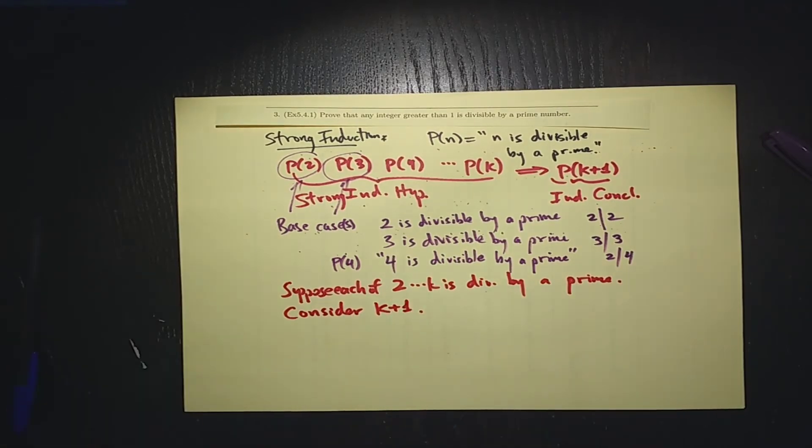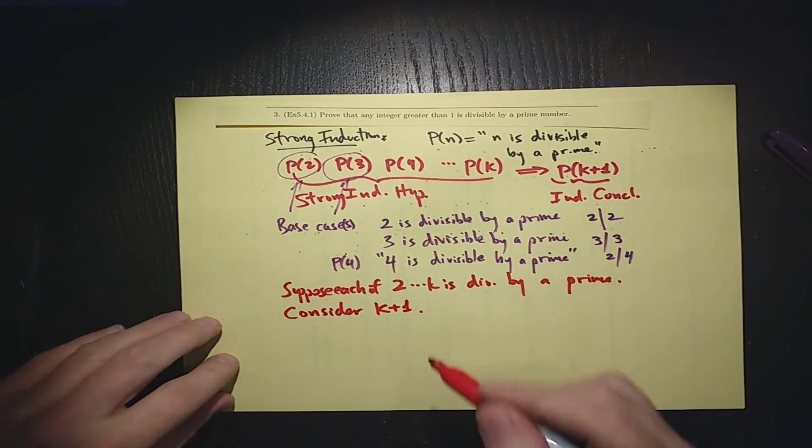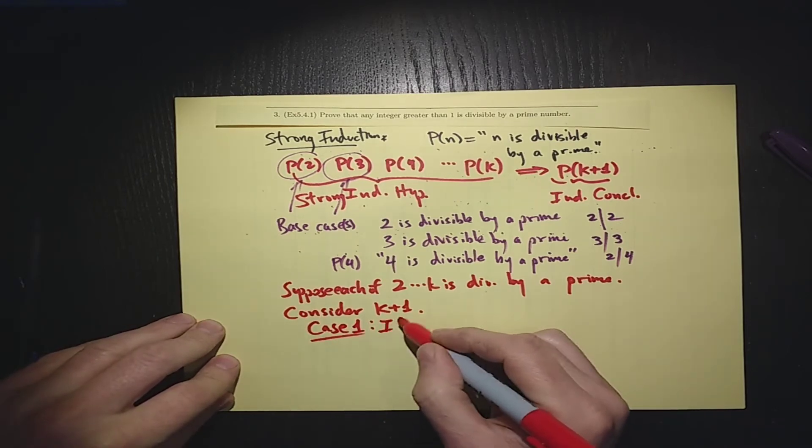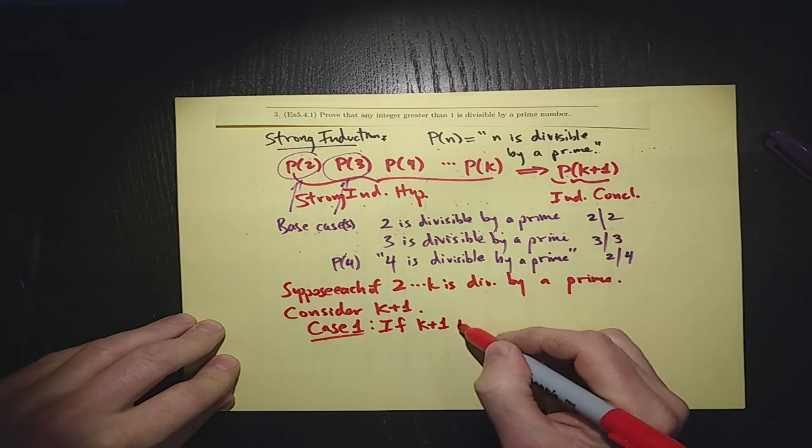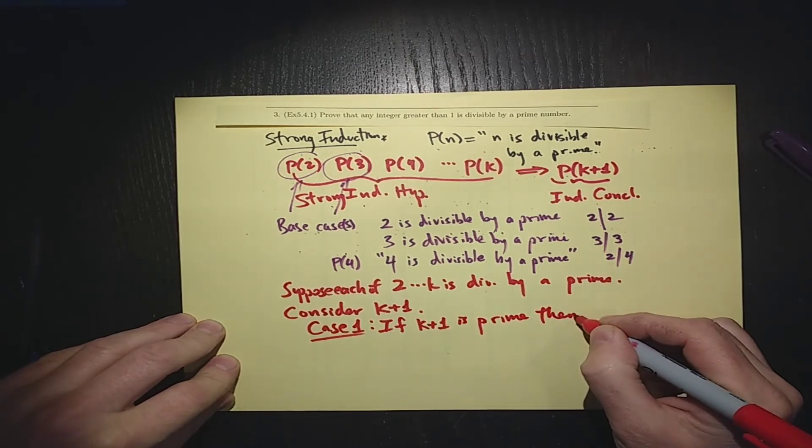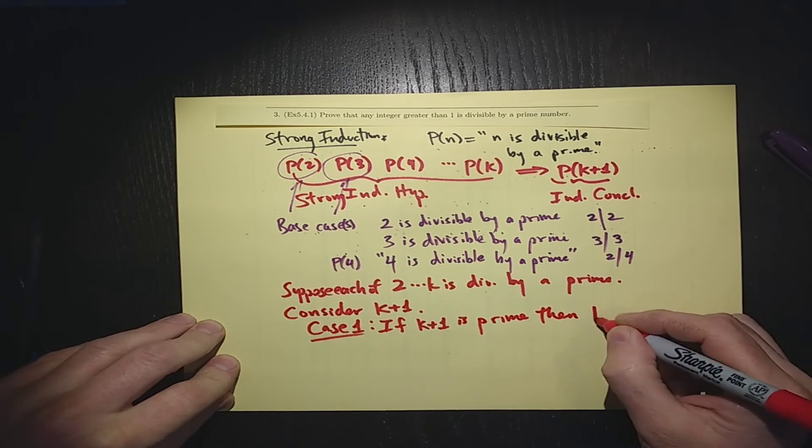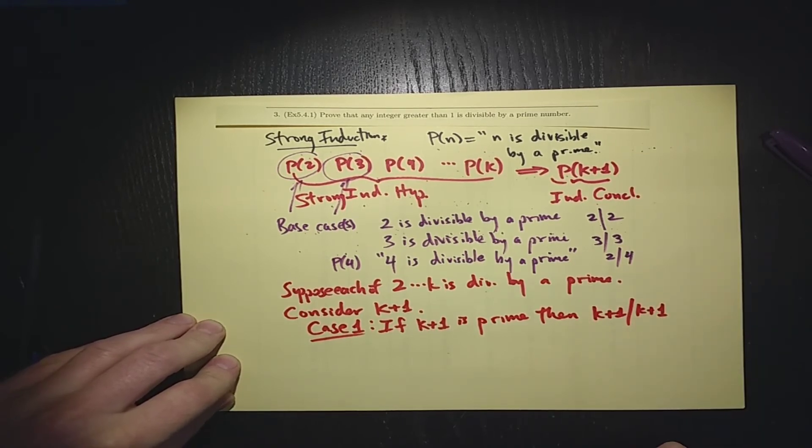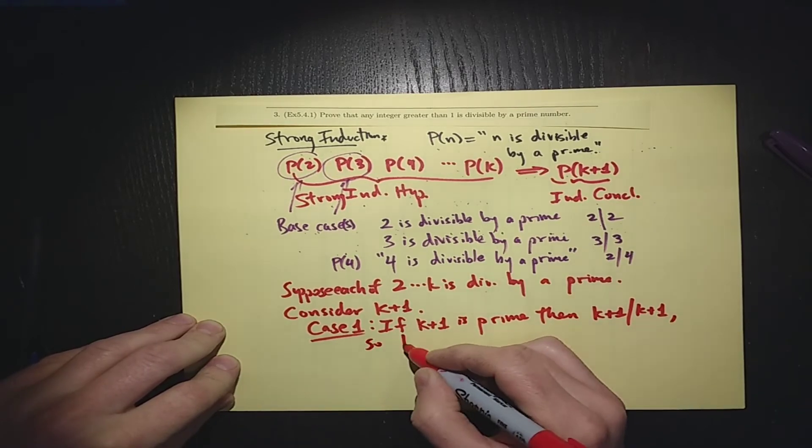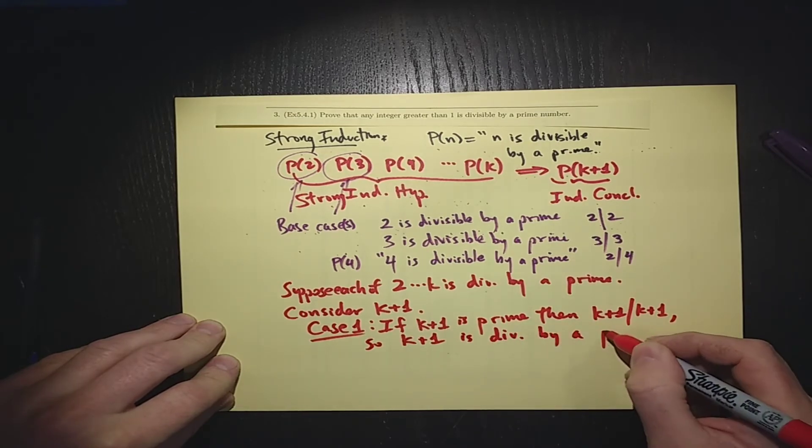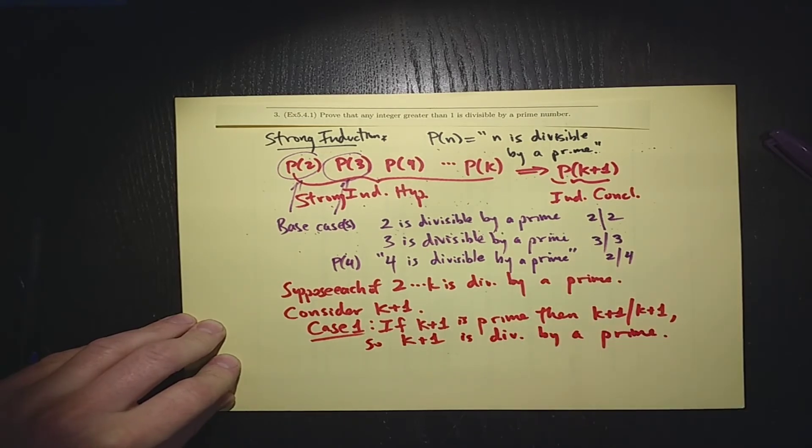Now, there's actually really two cases. One is the trivial case. Case 1, if k+1 is prime, well, then just like 2 and 3, k+1 is divisible by itself. k+1 is divisible by k+1, so k+1 is divisible by a prime, and we're set.